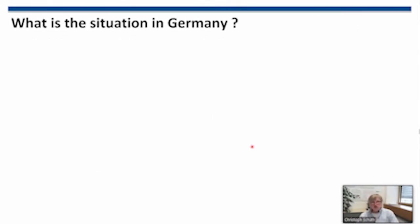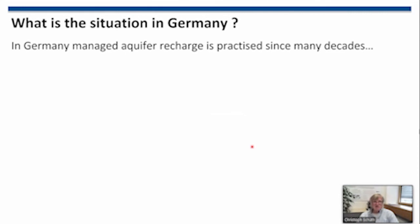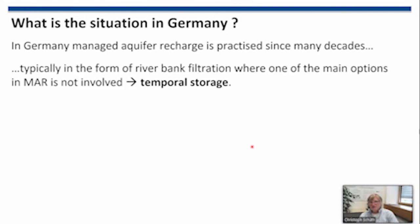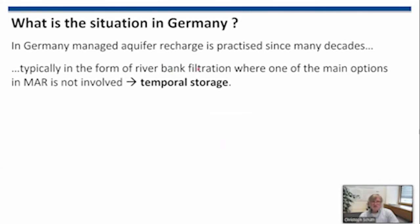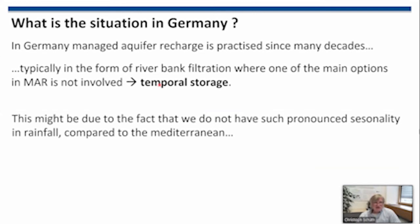In Germany, managed aquifer recharge is also relevant, though it is practiced mainly as river bank filtration — pumping from wells near a river like the Rhine to induce a gradient from the river into the aquifer. This differs from the temporal storage aspect of MAR. Germany may not have the pronounced seasonality of the Mediterranean, but recent droughts like 2018 — the driest year on record — have created water supply problems, including villages needing water delivered by tank trucks.